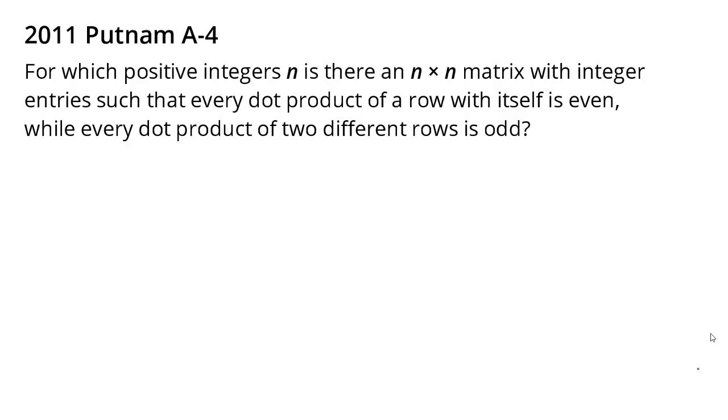In the last video, we analyzed and solved this Putnam problem from 2011, asking us to figure out for which dimension of the square matrices does there exist a matrix with integer entries, such that if you take a dot product of a row with itself, you get an even number, whereas if you take a dot product of two different rows, you get an odd number.